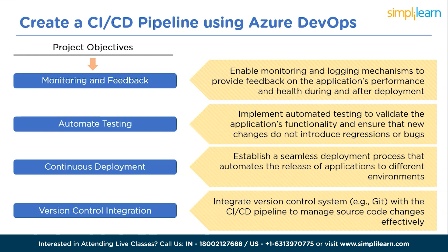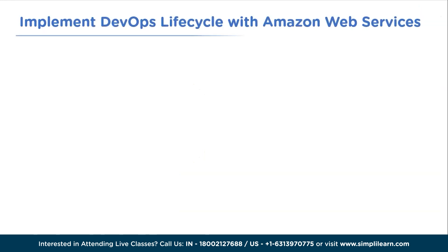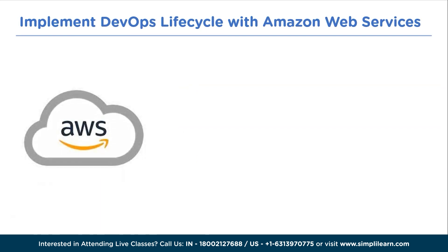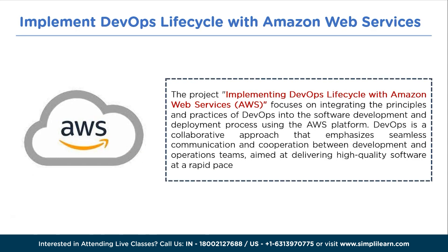The next intermediate project is implementing the DevOps lifecycle with Amazon Web Services (AWS). This project focuses on integrating the principles and practices of DevOps into the software development and deployment process using the AWS platform. DevOps is a collaborative approach that emphasizes seamless communication and cooperation between development and operations teams, aimed at delivering high-quality software at a rapid pace. By leveraging AWS services and tools, this project aims to automate, streamline, and optimize the software development lifecycle.